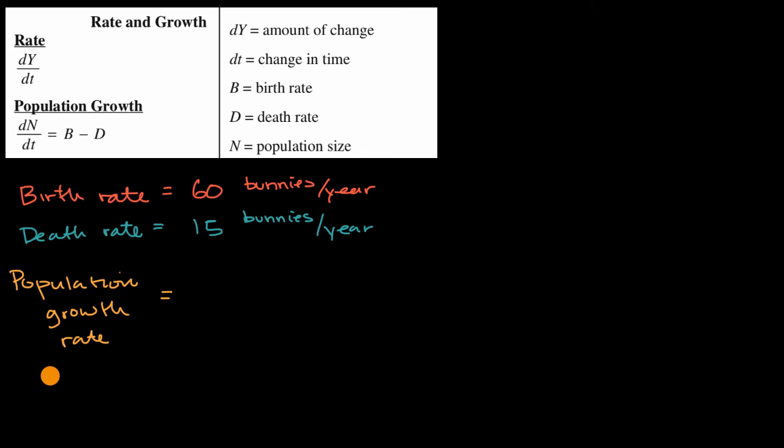Well, your population growth rate, if you think about just a given year, in that year you'll grow your population by 60 bunnies per year. But then you would shrink by the 15 that died. So it would shrink by 15 bunnies per year.